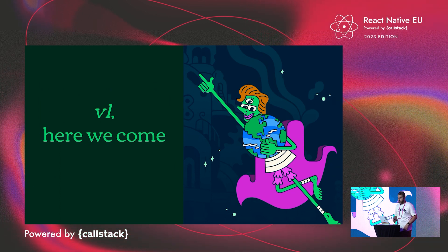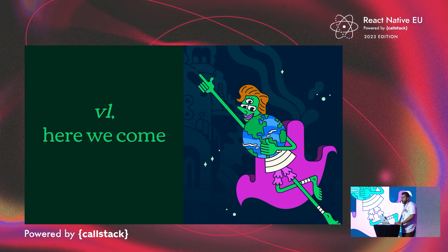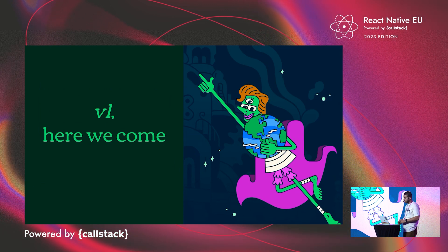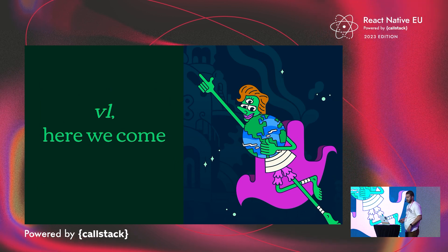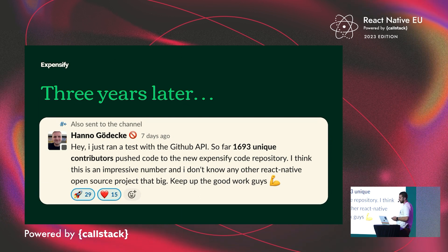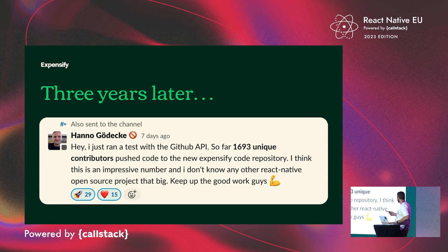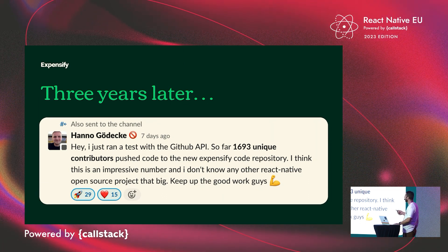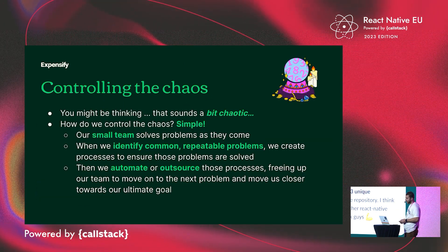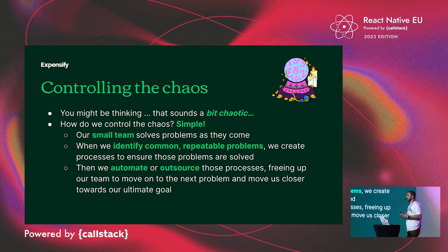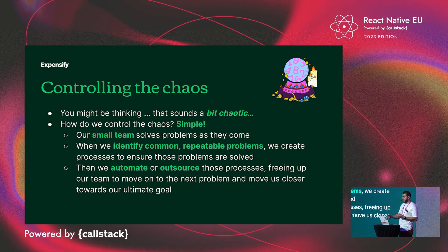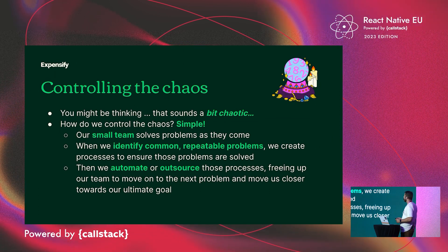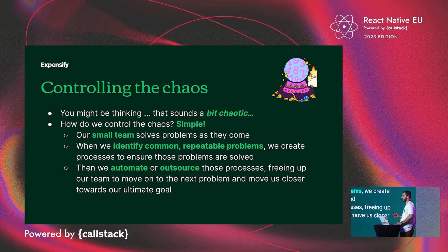We had only about 30 or 40 engineers, so we decided we needed to scale up our engineering output. Rather than scaling up vertically, we decided to scale up horizontally — much like our internal team — to engage a broader community of independent developers from around the world in the building and maintenance of our app. Fast-forward to today: we have a very vibrant open-source community with over 1,600 unique developers pushing code to our new Expensify repository. For the rest of this presentation, I'm going to be talking about what we've learned along the way engaging such a broad group of independent developers, and I think it might be particularly interesting to any freelancers or people looking to get extra help in a fledgling product.